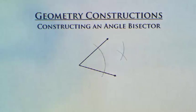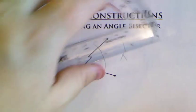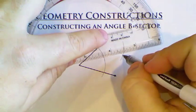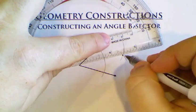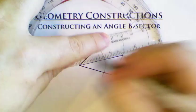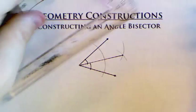What do you suppose that intersection point is good for? That is where our angle bisector goes, so put your straight edge down and there we have made an angle bisector.